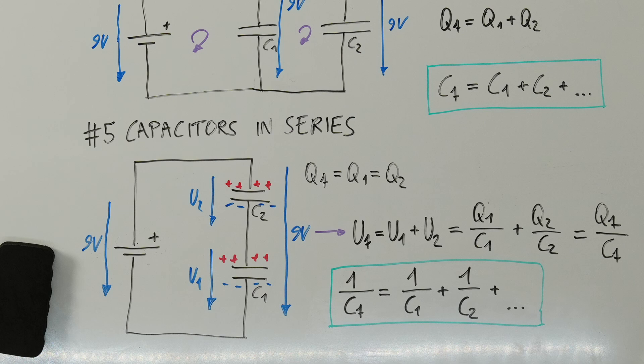In series, the charges of the single capacitors are the same as the charges want to spread equally across all plates. However, the voltages across the capacitors are not the same. To get the equivalent capacitance, we add the reciprocals of the single capacitances and receive the reciprocal of the equivalent capacitance.